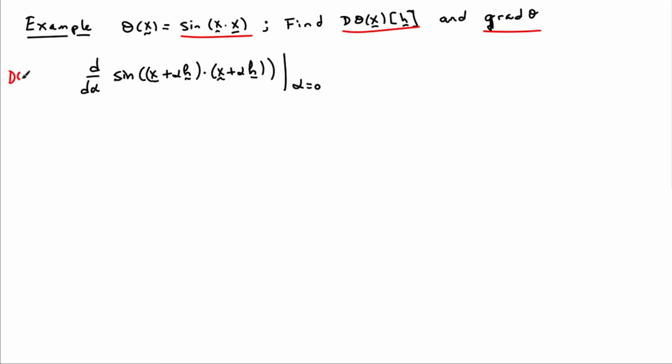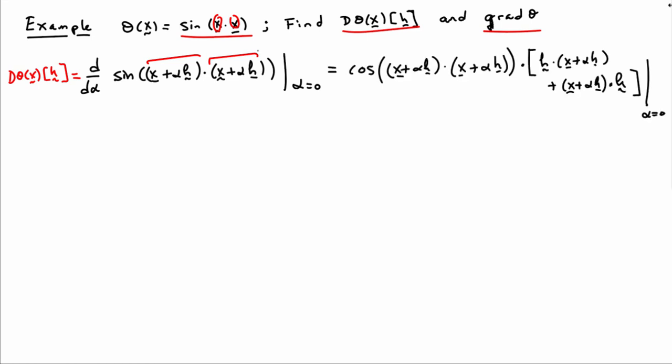So the first step is to simply apply the definition that we've constructed here. So this is d theta of x evaluated in the direction h. So all I do is every place I see an x in my original function, I replace it by an x plus alpha h. And now what I'm going to do is just take a derivative with respect to the scalar alpha. And so I'm going to need the chain rule to get inside the sine. And then I'm going to need the product rule because I have two alphas multiplying each other. So if I do that, the derivative of sine is cosine.